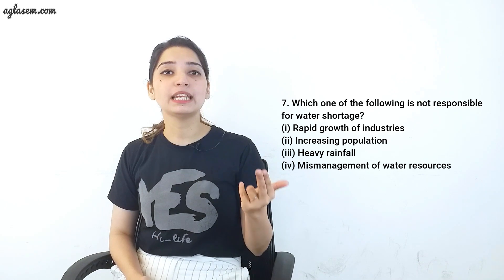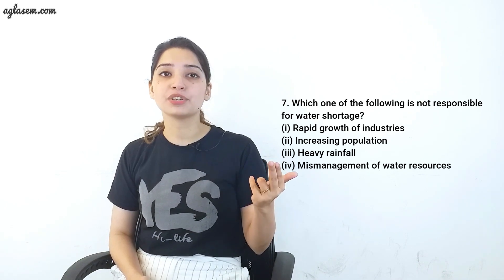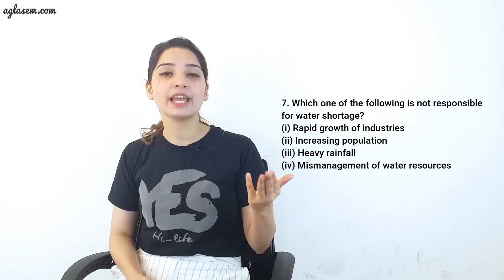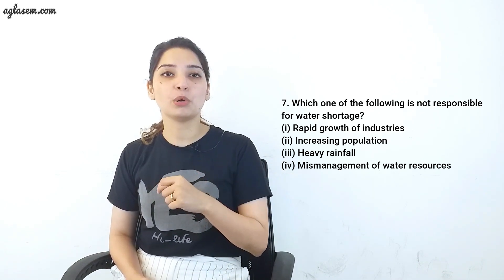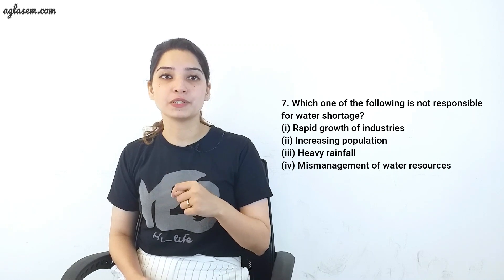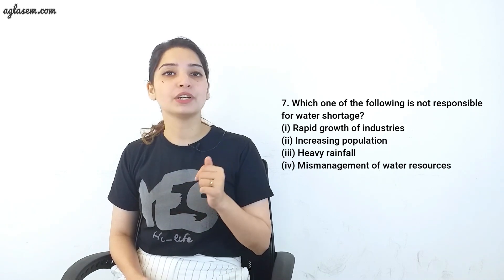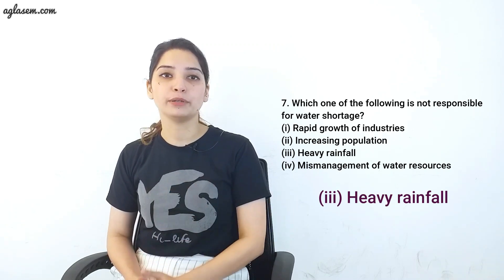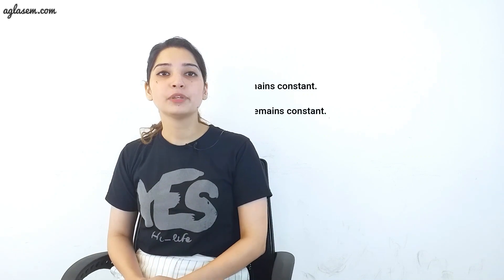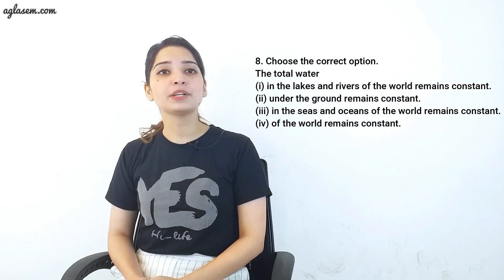Question 7: Which one of the following is not responsible for water shortage? Options: rapid growth of industries, increasing population, heavy rainfall, mismanagement of water resources. The answer is heavy rainfall.